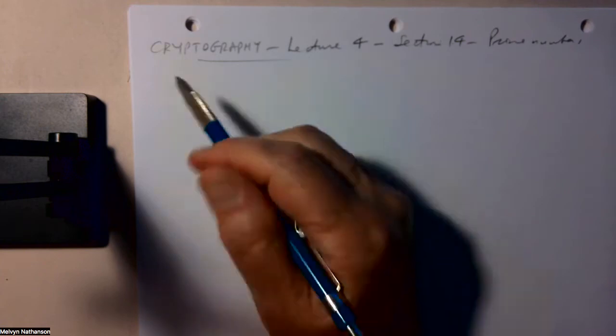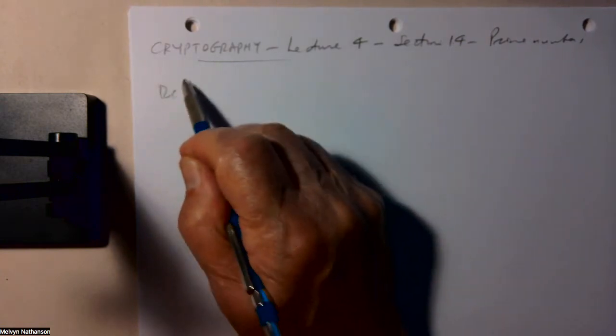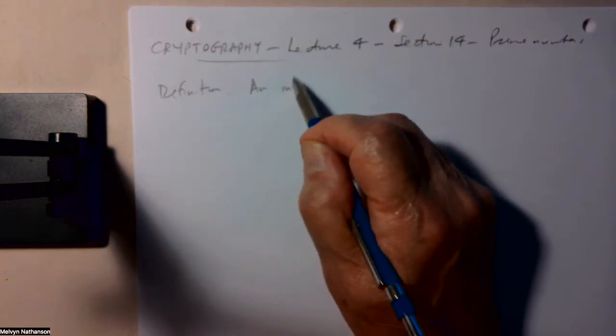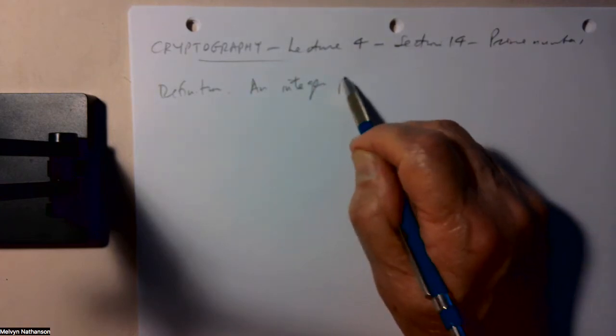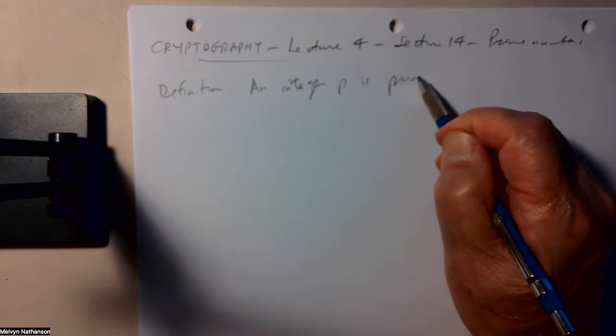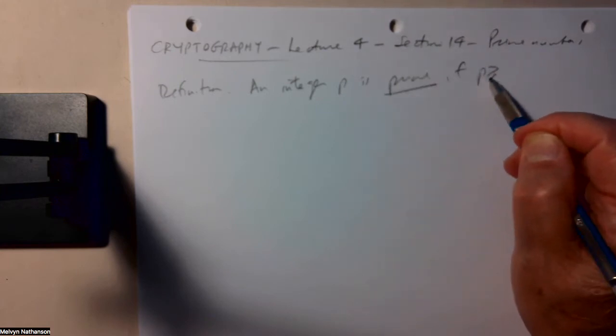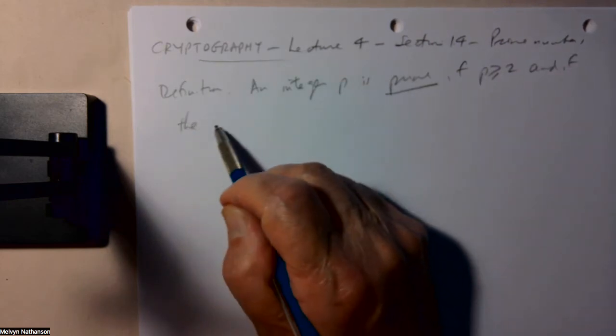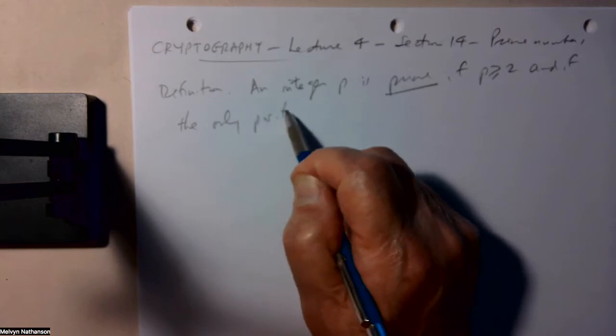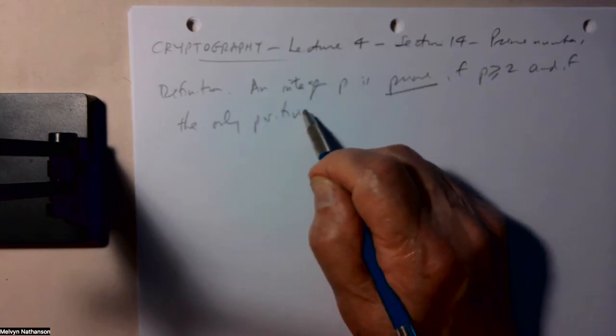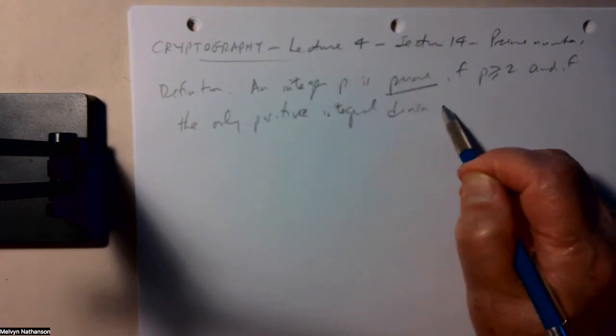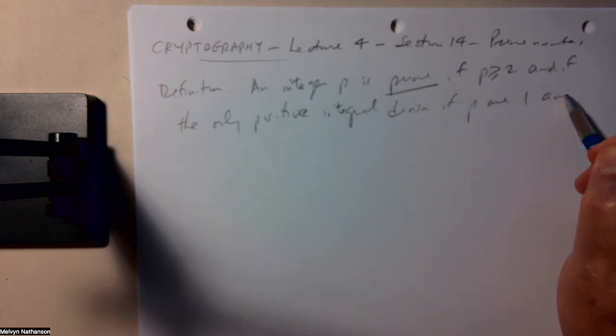The most important thing is to know about prime numbers. A prime number is an integer. An integer p is prime if first, p is at least two. So p is not only positive, but one is not a prime. And if the only positive integral divisors of p are 1 and p.